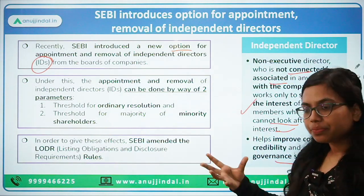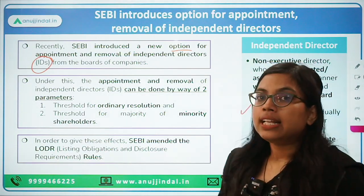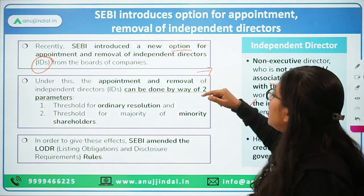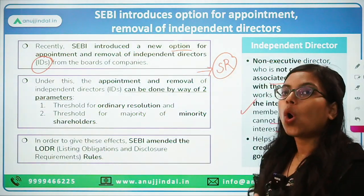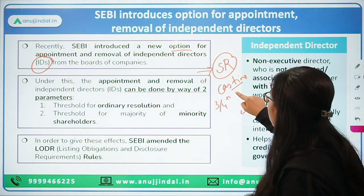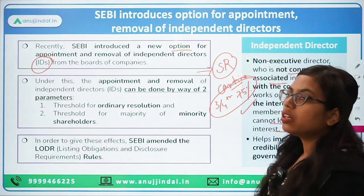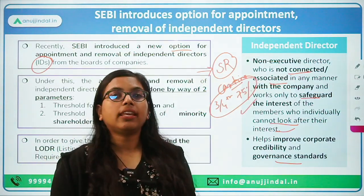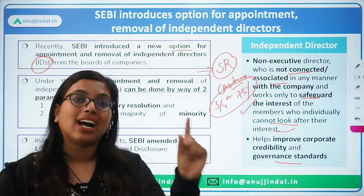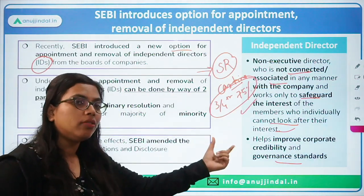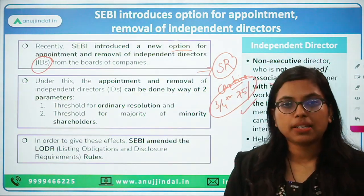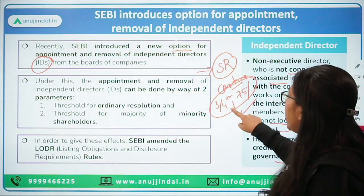Whenever there is appointment or removal of independent directors, it is done by a resolution known as a special resolution, where at least three-fourths — or 75% — of all persons casting their votes must vote in favor for the person to be appointed as an independent director. Similarly, in case of removal, at least 75% of those who have come to cast their vote must vote for removal.